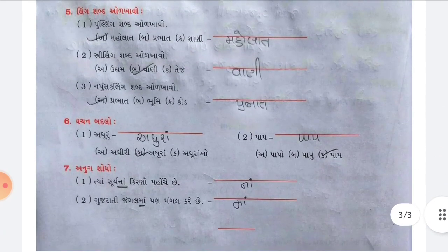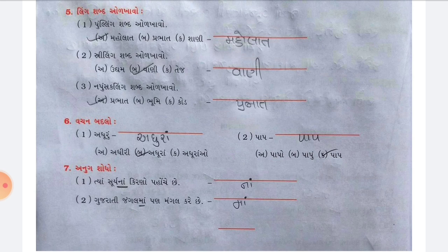Question 5 — Link Shabda Jodakhavu (match the linked words). Number 1: Pul — correct option is A: Maholat. Number 2: Stirling Shabda — correct option is Ba: Vani. Number 3: Napu-Sakling Shabda — correct option is Prabhat.